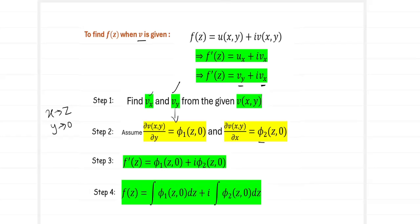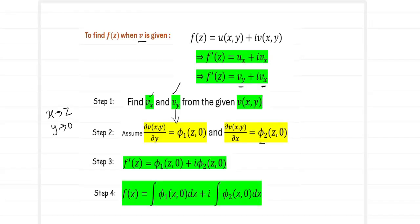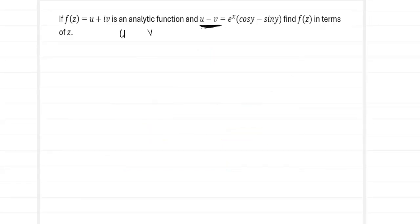Now moving to a higher level: f(z) = u + iv is an analytic function and we have been given u minus v equal to e^x times (cos y - sin y). We are asked to find f(z) in terms of z. Rather than giving u or v independently, we have been given them as a combination u minus v. The Milne Thomson method must be slightly modified to be applicable for this kind of function.